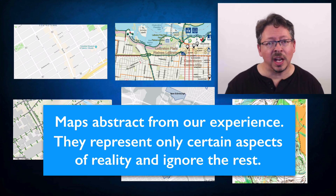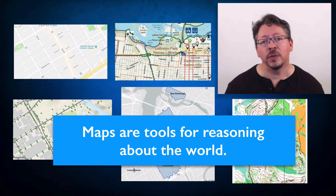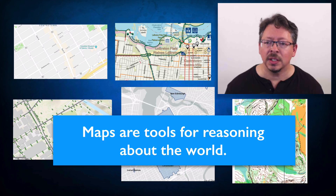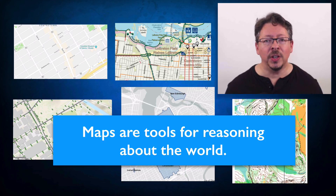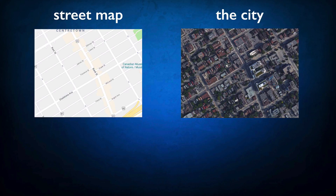This leads to the second point: maps are tools for reasoning about the world. They're tools for drawing inferences. What kind of inferences? Inferences about the features that we care about. If what I care about is a way of navigating from one street location to another street location, then a street map is a tool for doing this. By looking at the map and reasoning about features of the map, I can draw conclusions about features of the city.